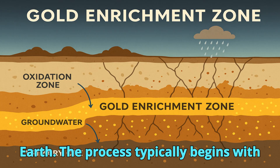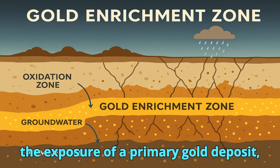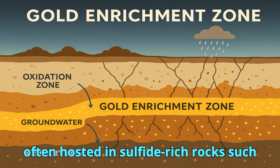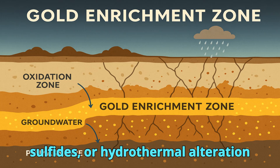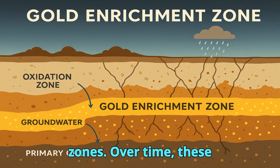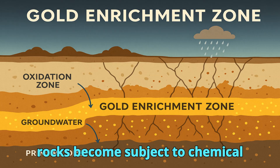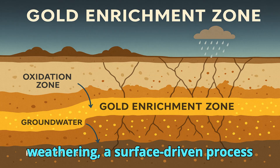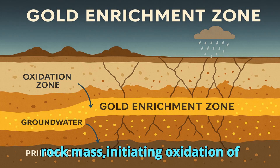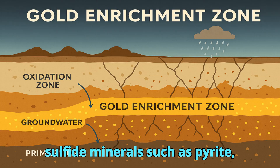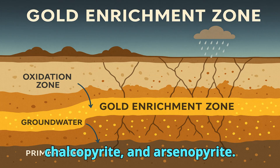The process typically begins with the exposure of a primary gold deposit, often hosted in sulfide-rich rocks such as quartz veins, volcanogenic massive sulfides, or hydrothermal alteration zones. Over time, these rocks become subject to chemical weathering — a surface-driven process where oxygen and water infiltrate the rock mass — initiating oxidation of sulfide minerals such as pyrite, chalcopyrite, and arsenopyrite.